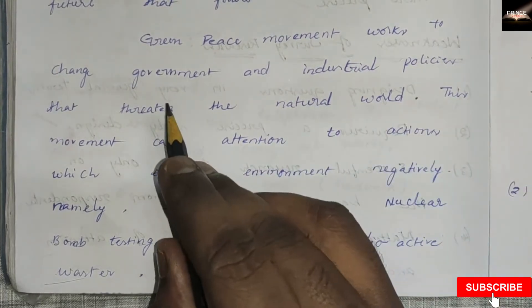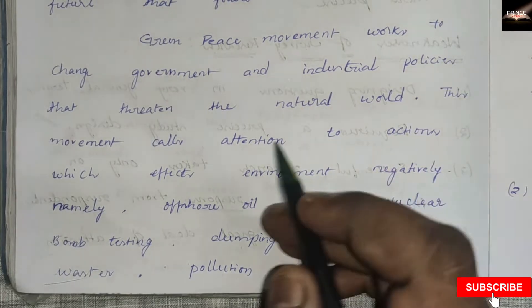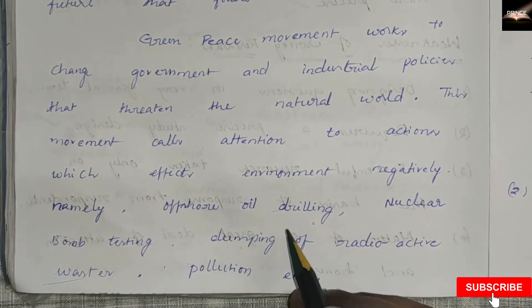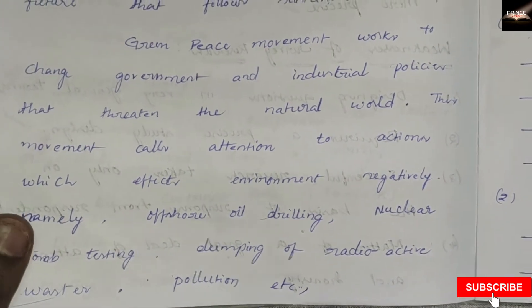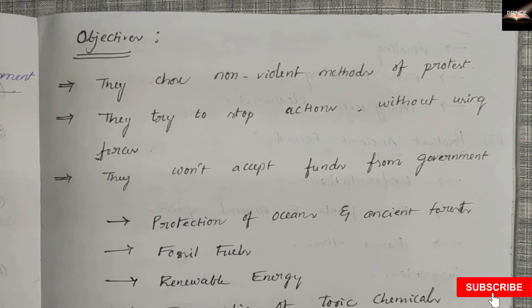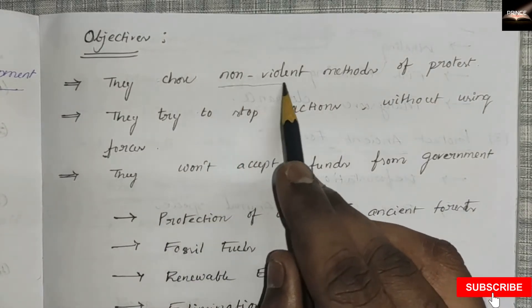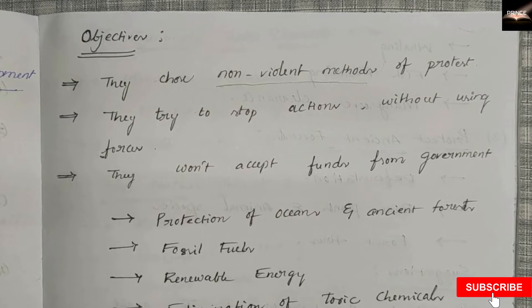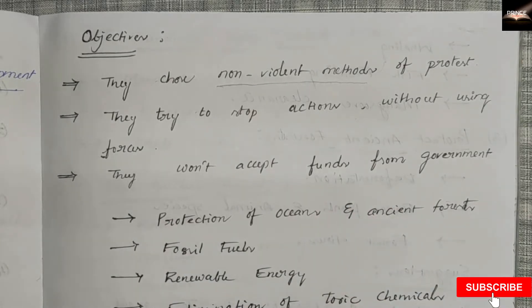Greenpeace works to change government and industrial policies that threaten the natural world and the environment. This movement calls attention to actions which affect the environment negatively, namely offshore oil drilling, nuclear bomb testing, dumping of radioactive waste, pollution, etc. They choose nonviolent methods of protest to stop environmental degradation activities and won't accept funds from government because they need political independence.